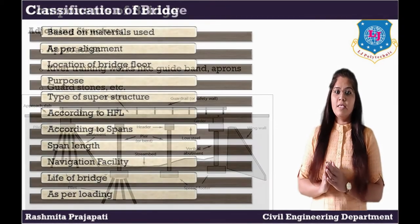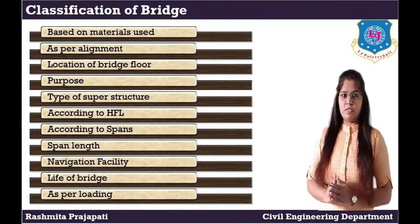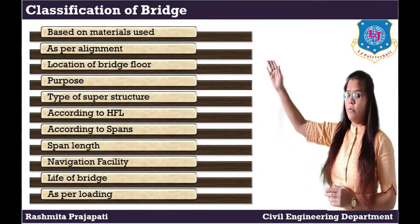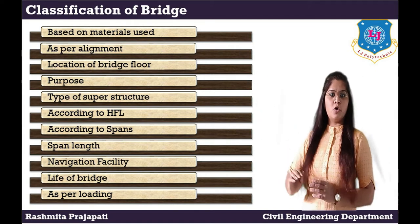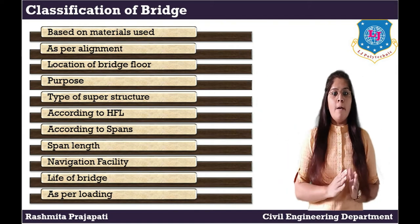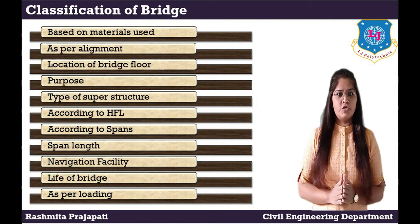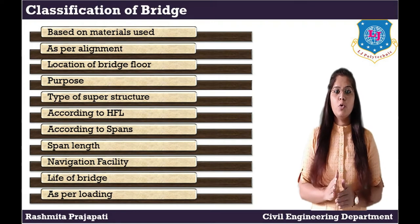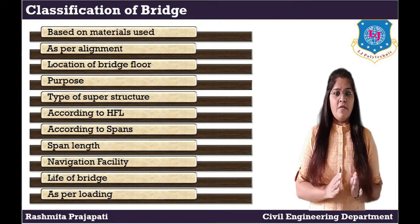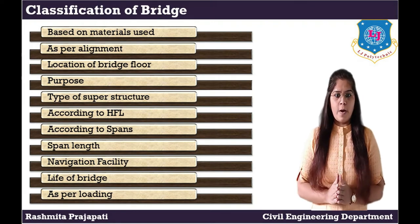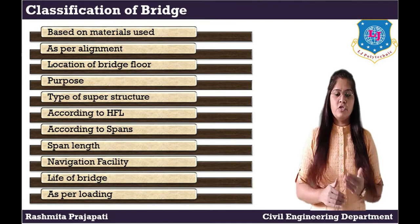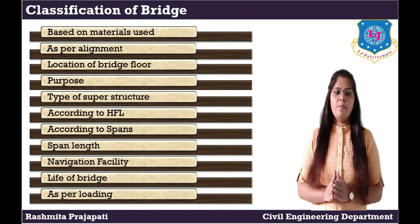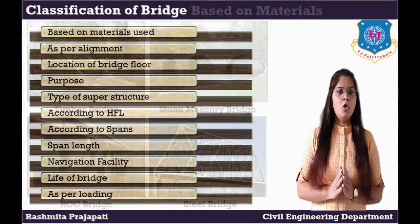Now classification of bridge. Bridges are classified based on: material used, alignment, location of bridge floor, purpose, types of superstructure, according to high flood level, according to span, span length, navigation facility, life of bridge, and lastly as per loading.